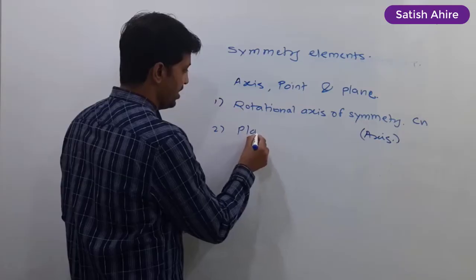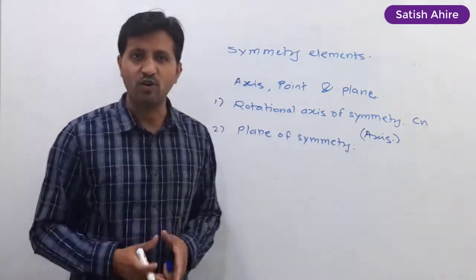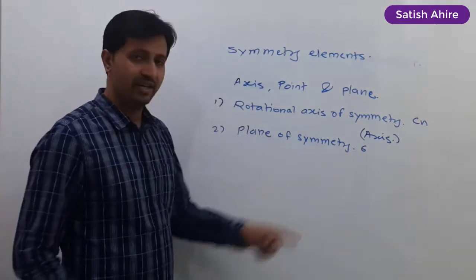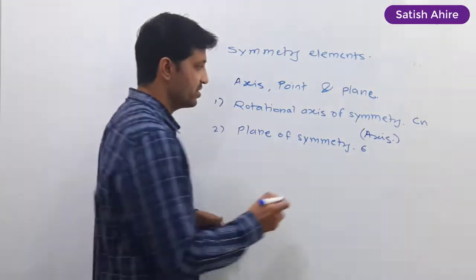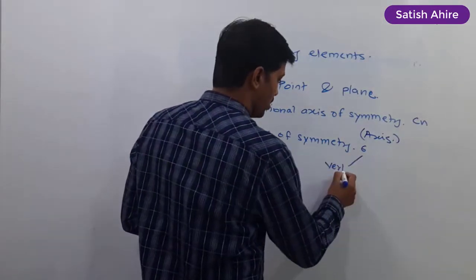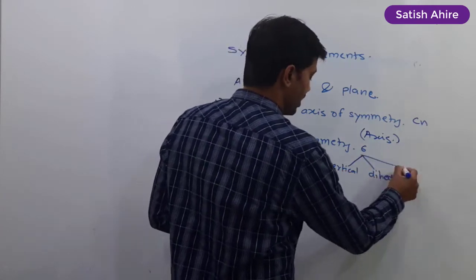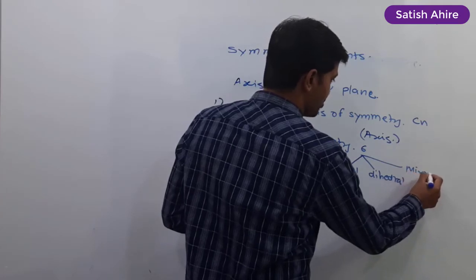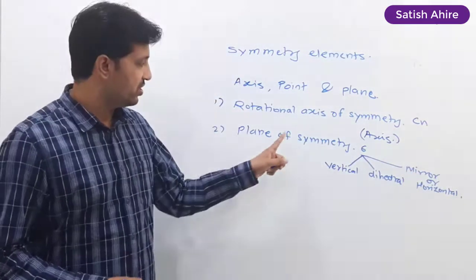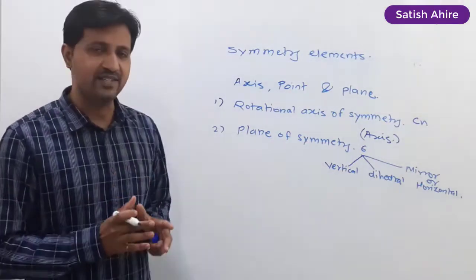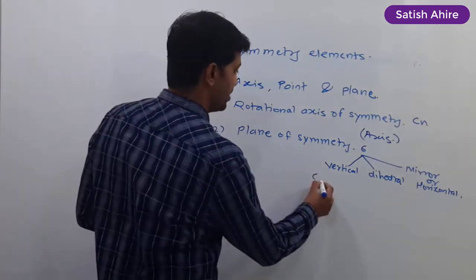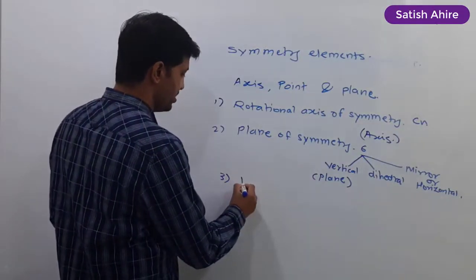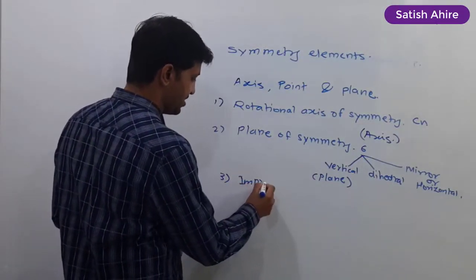The second type of symmetry element is the plane of symmetry, labeled with the symbol Sigma. Sigma exists in three forms: vertical plane, dihedral plane, and mirror plane or horizontal plane. Always remember, the plane of symmetry always exists in the form of a plane, which is why it is known as the plane of symmetry.